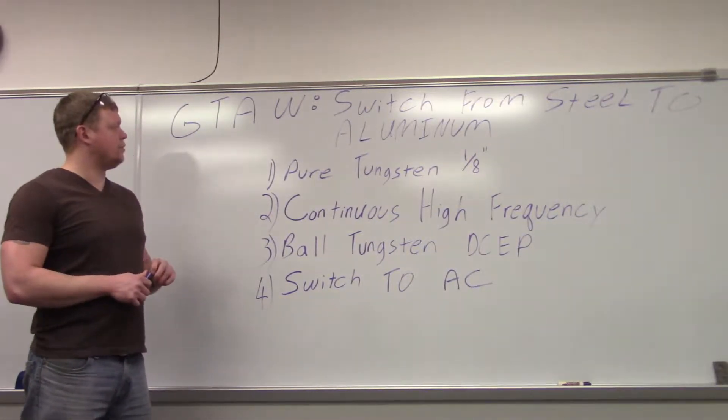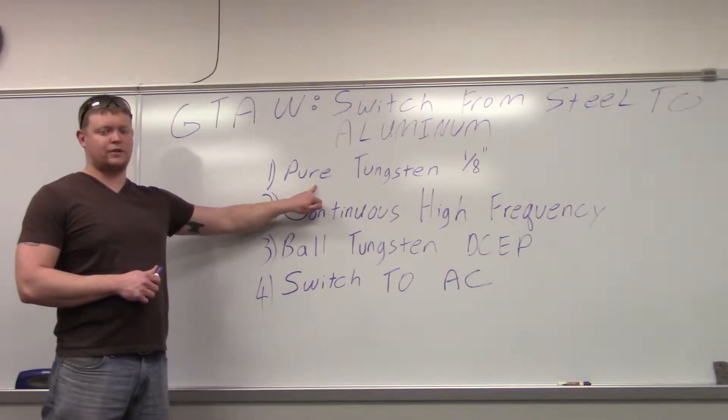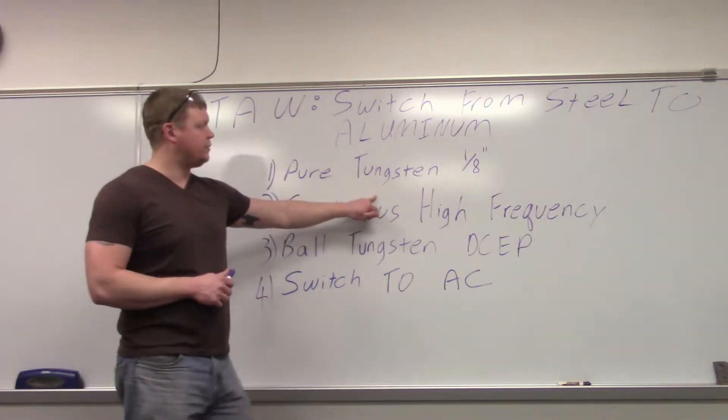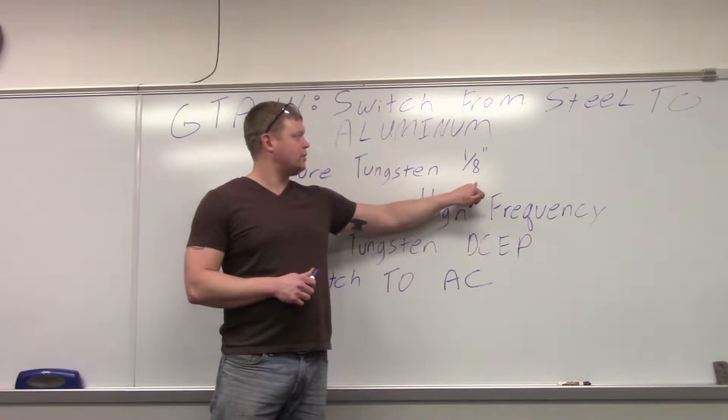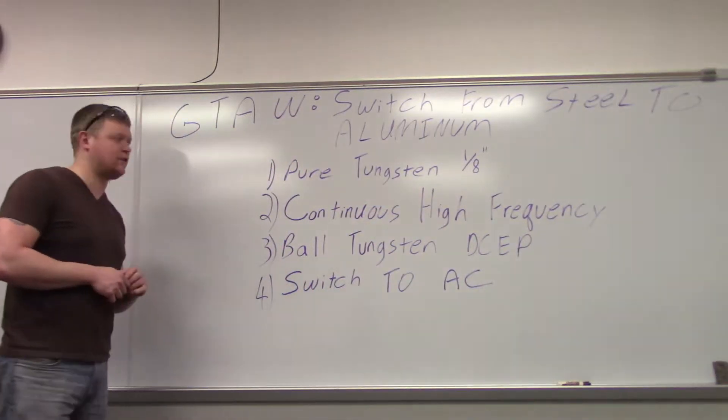The first thing we're going to do is go to pure tungsten. We use 2% thorium tungsten typically on steel and stainless, so we're going to go to pure. We're going to move up to 1/8 inch diameter. It needs a heavier diameter tungsten because you're putting a lot more heat into it.